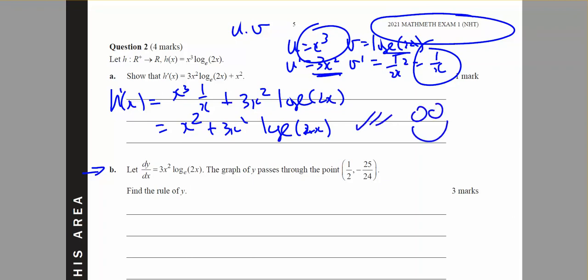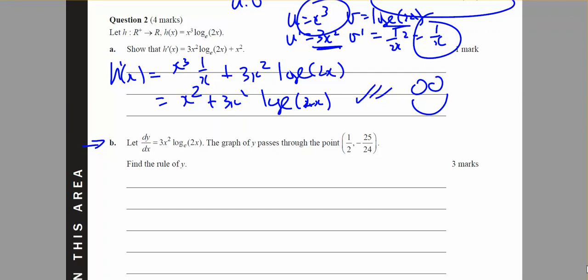In part b, I need to find what y equals, find the rule for y if dy/dx equals this. So I know that y will equal the integral of 3x squared log base e of 2x dx, and then I can use this to find out c.